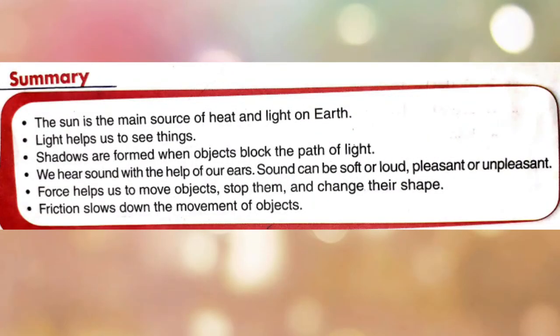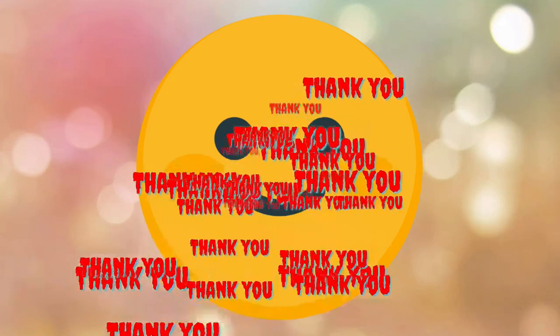Summary — let's review what we learned in this chapter. The sun is the main source of heat and light on earth. Light helps us to see things. Shadows are formed when objects block the path of light. We hear sound with the help of our ears. Sound can be soft or loud, pleasant and unpleasant. Force helps us to move objects, stop them and change their shape. Friction slows down the movement of objects. This ends our chapter 11: Light, Sound and Force. I hope you all understood this chapter well. Thank you.